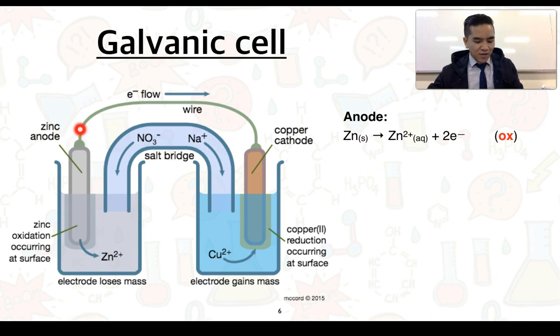Those electrons can flow through an external circuit, so through some wires, and reach our copper half cell. So electrons will deposit onto here, and this allows for copper ions in solution in this half cell to undergo reduction, and we get the formation of new copper atoms along the surface of this cathode. That can be represented by this half equation here where copper ions gain two electrons to form copper metal.